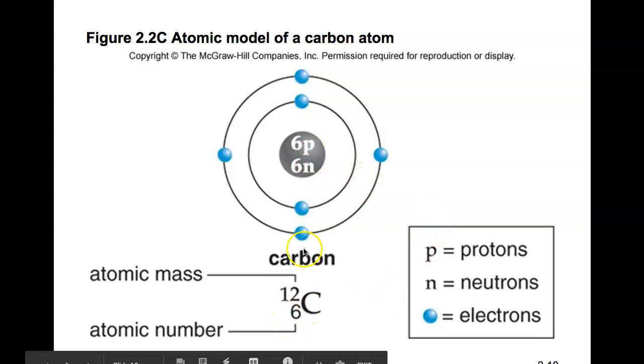The atomic number is going to tell us the number of protons and the number of electrons of an atom that is not chemically bonding. So the atomic number will always give you the number of protons, but it will also give you the number of electrons if that atom is not chemically bonding with itself or another atom.